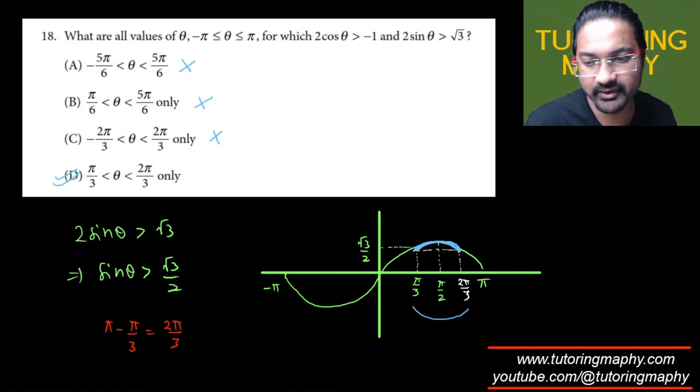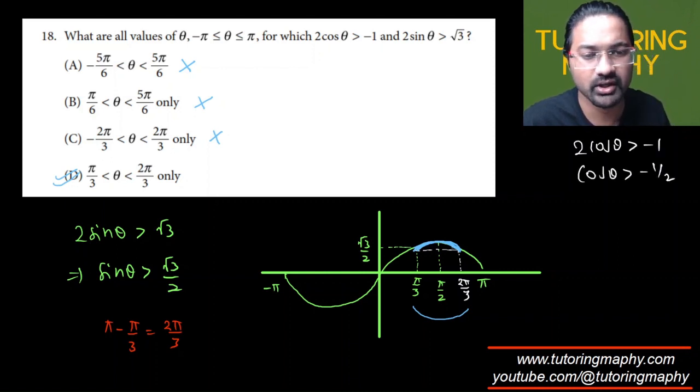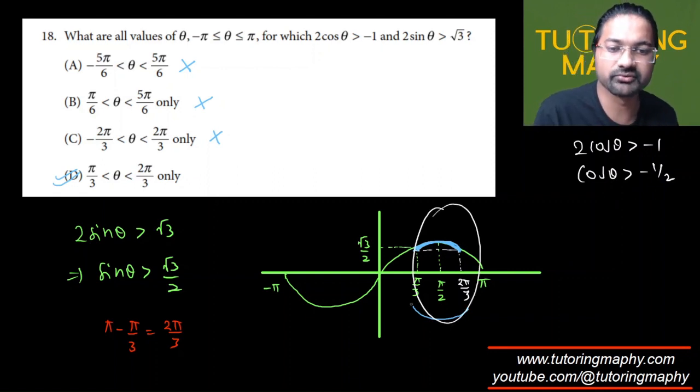But just for the sake of clarifying I'll solve 2 cos theta is greater than negative 1 as well. Again I'm going to do the same thing, cos theta is greater than negative 1 over 2. So I'm just going to make sure that in this region cos theta is negative greater than negative 1 over 2.